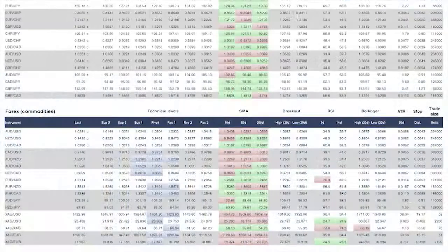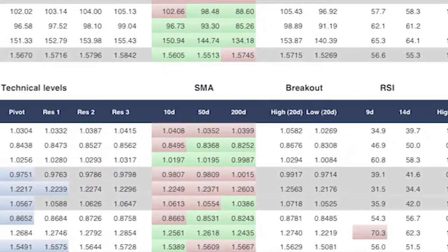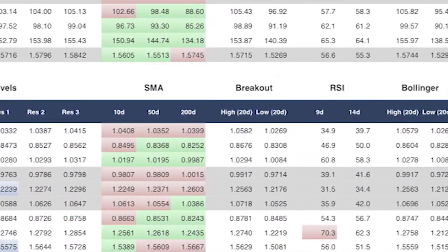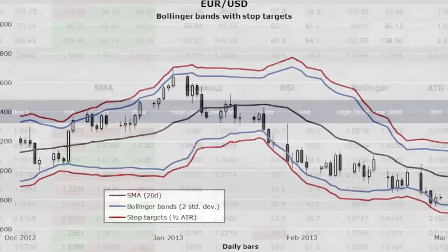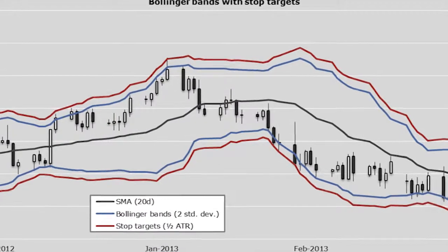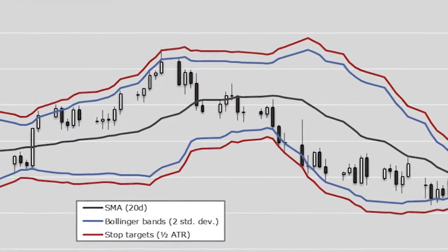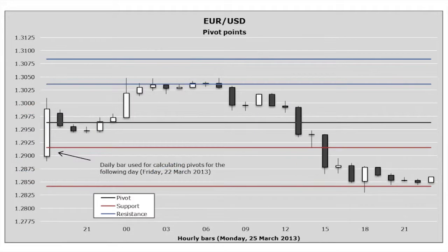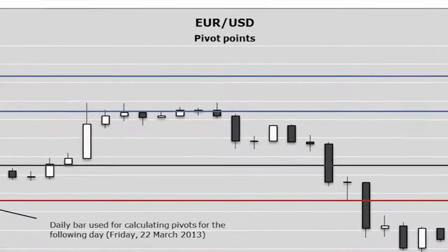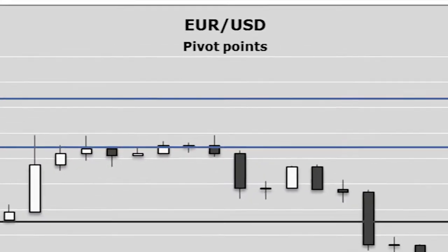Trade Navigator gives you the tools to identify resistance and support levels — those stubborn bands the value of any asset struggles to break through. This could help you make money, but also manage your risk.